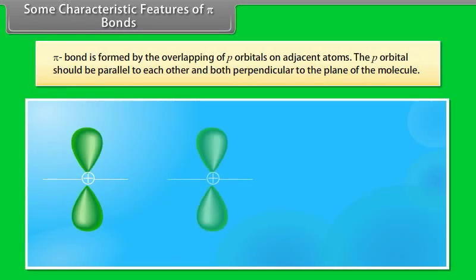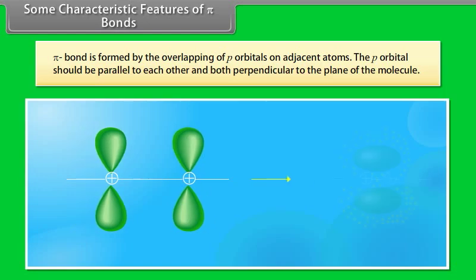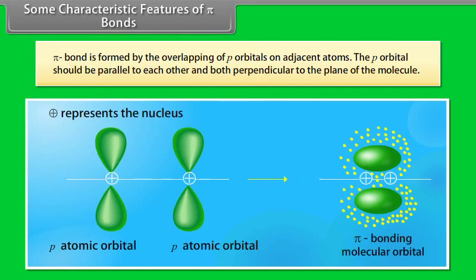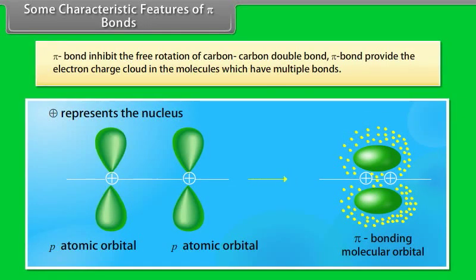Pi bond is formed by the overlapping of p-orbitals on adjacent atoms. The p-orbitals should be parallel to each other and both perpendicular to the plane of the molecule. Pi bond inhibits the free rotation of carbon-carbon double bond. Pi bond provides the electron charge cloud in molecules which have multiple bonds.